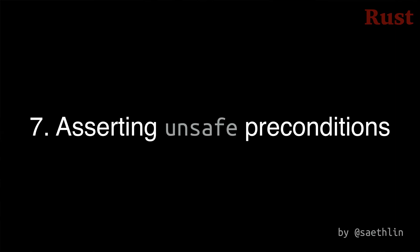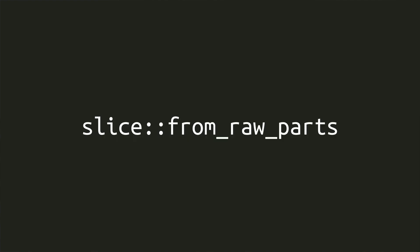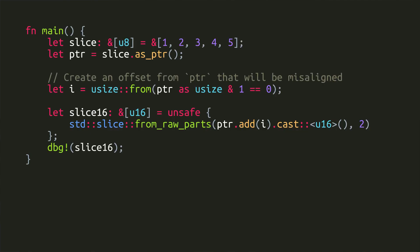Number 7: The Rust standard library has a number of assertions for the preconditions of unsafe functions, but historically they've only been enabled in debug assertion builds of the standard library to avoid affecting release performance. Since the standard library is usually compiled and distributed in release mode, most Rust developers weren't ever executing these checks at all. Now the condition for these assertions is evaluated at code generation, so they will be checked depending on the user's own setting for debug assertions — enabled by default in debug and test builds. For example, slice::from_raw_parts requires an aligned non-null pointer, and the debug assertion can now catch a purposely misaligned pointer because of the unsafe precondition.